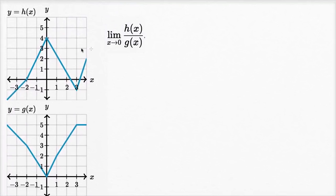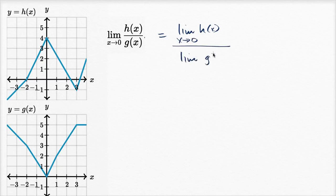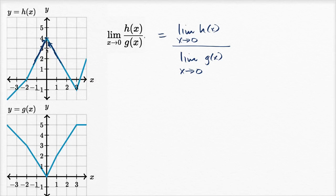These look like continuous functions. We have the limit as x approaches zero of h(x) over g(x). Using limit properties, this equals the limit of h(x) as x approaches zero, divided by the limit of g(x) as x approaches zero. For h(x): approaching zero from the left gives four, and from the right also gives four — which is also the value of the function at zero, since it's continuous. So the numerator is four.